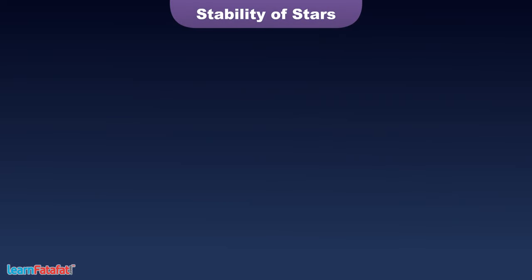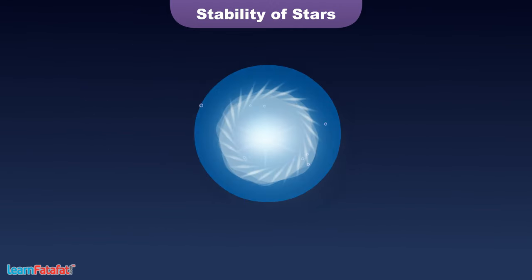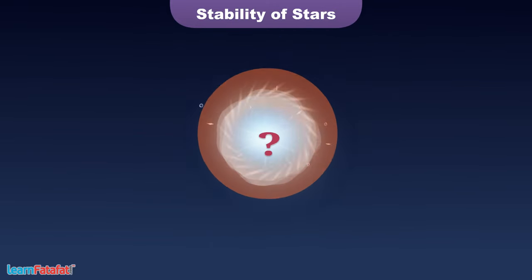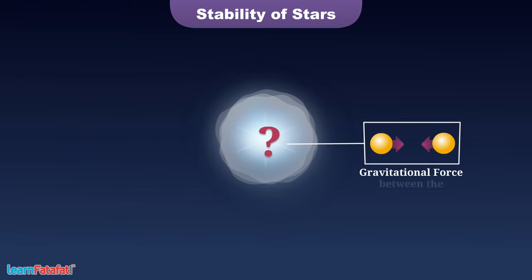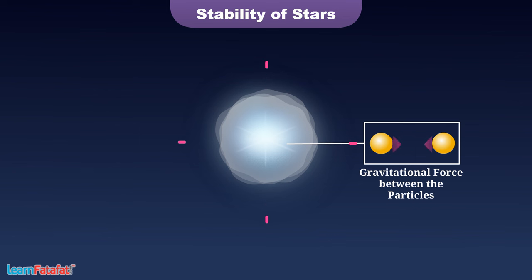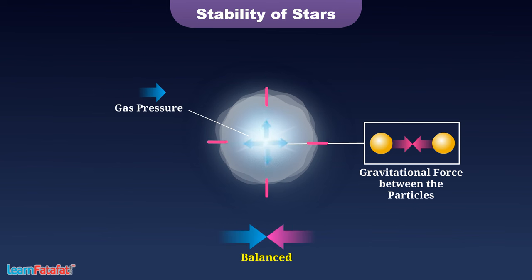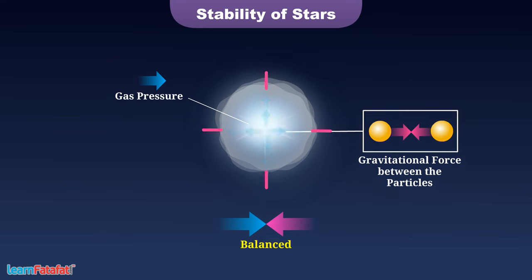Stability of stars: When a firecracker explodes, the smoke spreads everywhere. Then why does such a huge explosion not cause spreading of the gas cloud in space? The reason is the gravitational force between the particles, which constantly tries to bring the particles close together. As the gas pressure, which acts away from the center, is balanced by gravitational force, which acts towards the center, the star remains stable for many years.